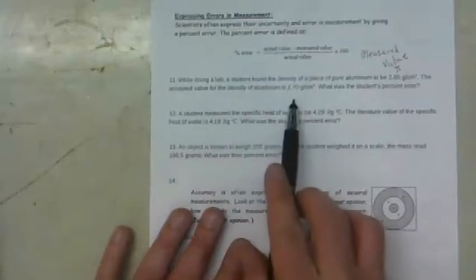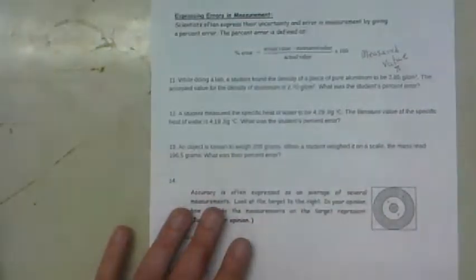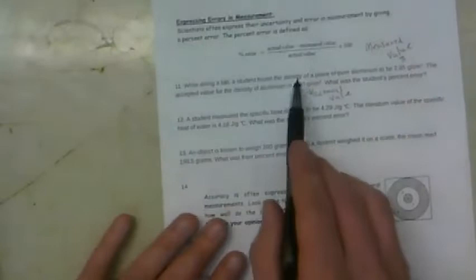The accepted value, so the actual value, is 2.70 grams. So if we just put all this stuff in the equation, we're going to take 2.7 minus 2.85.